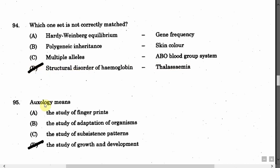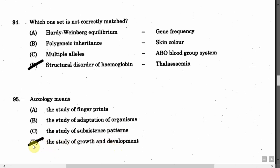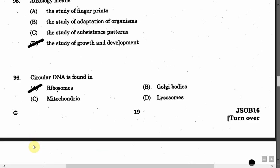The next question is: Auxology means — Option A: The study of fingerprints. Option B: The study of adaptation of organisms. Option C: The study of substances pattern. Option D: The study of growth and development. The correct answer is Option D, that is study of growth and development.